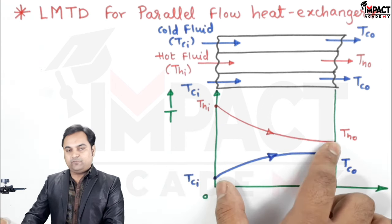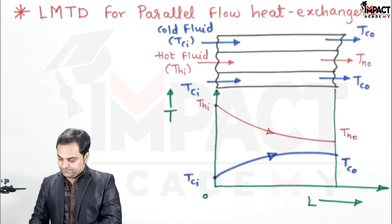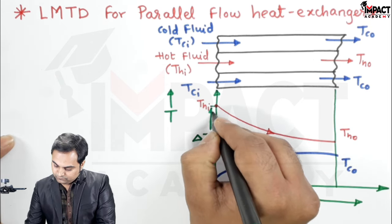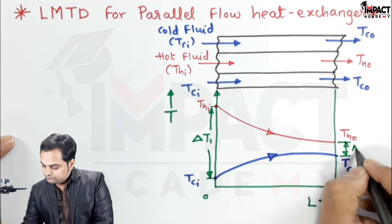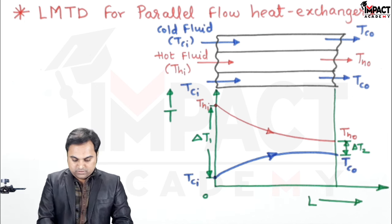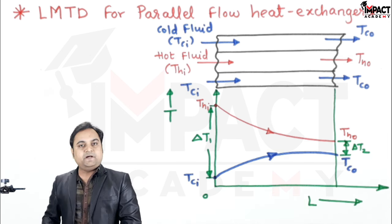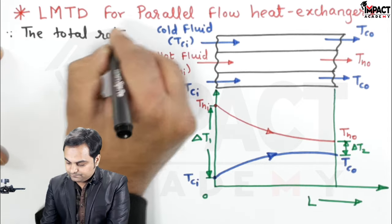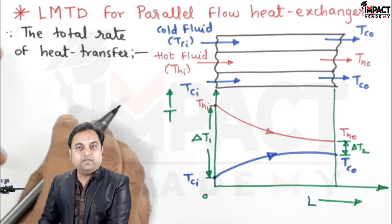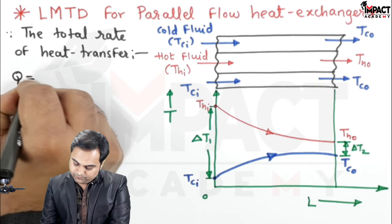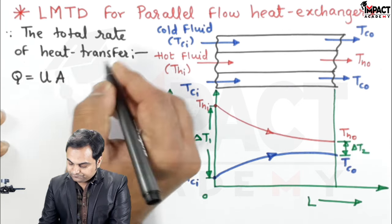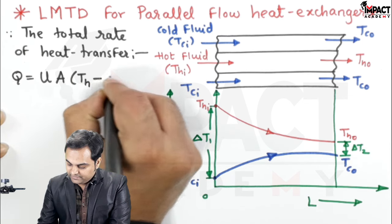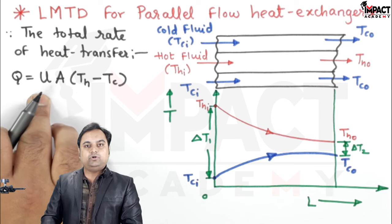The hot fluid is losing heat and the cold fluid is gaining heat, so there is a temperature drop for the hot fluid and a temperature gain for the cold fluid. At inlet, the temperature difference is indicated as delta T1, and at exit it is delta T2. The formula of heat transfer is Q equals U into A into the temperature difference of hot fluid minus cold fluid, where U indicates the overall heat transfer coefficient.